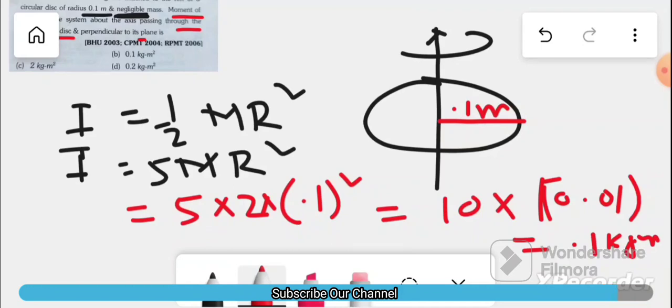So option b is the right answer. 0.1 kg meter squared is the correct answer.